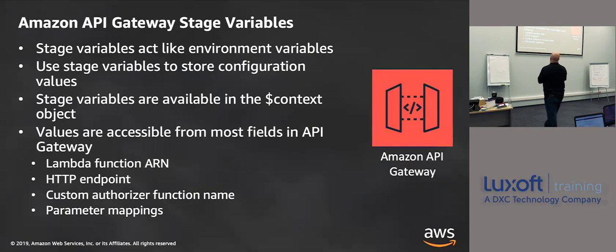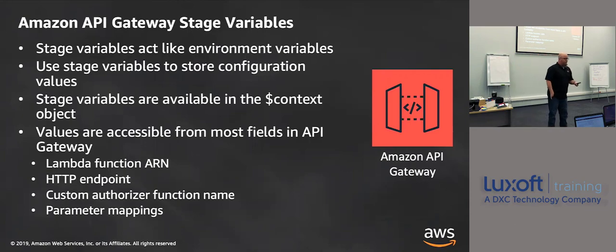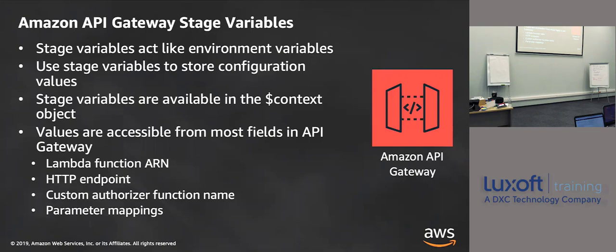API Gateway stage variables — most likely you won't use these, but you might. They come in handy if you're hitting multiple endpoints behind a single API and need to pass different variables. The environment variables are stored at the API itself. This comes in handy if you need to maintain multiple versions of an API for backwards compatibility — a v1, v2, v3. They hit the same lambdas but you can pass stage variables to let the lambda know which version.